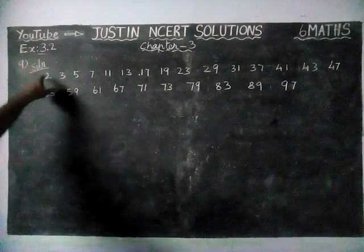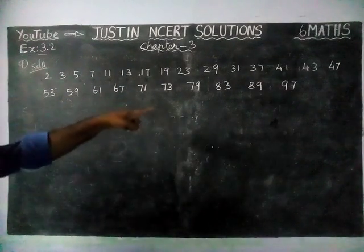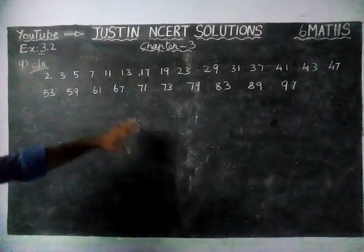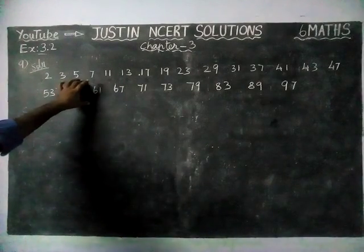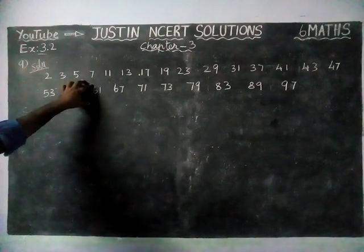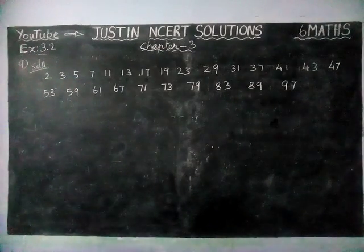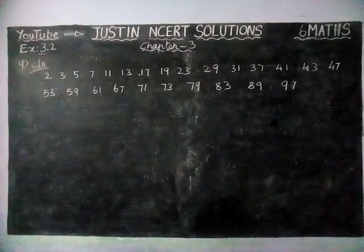And here, I have written all the prime numbers less than 100. Now we are going to check it. Continuously, 7 composite numbers we have to find.